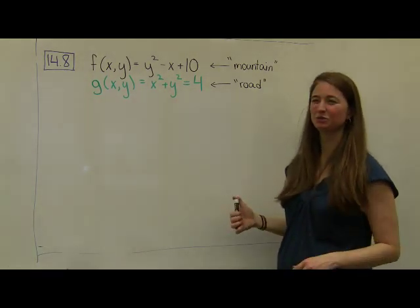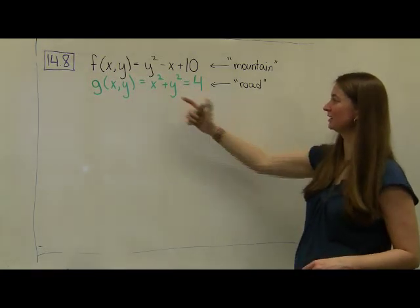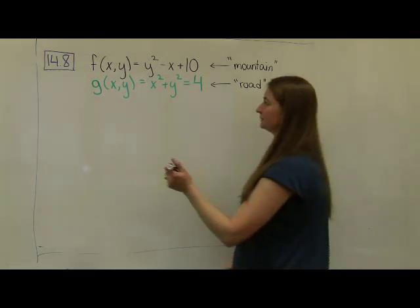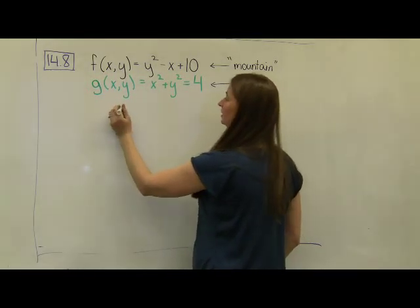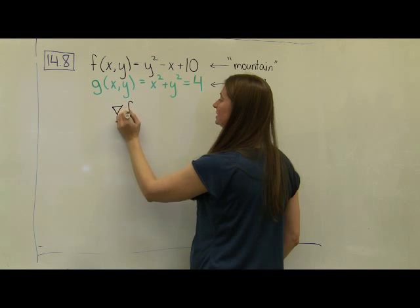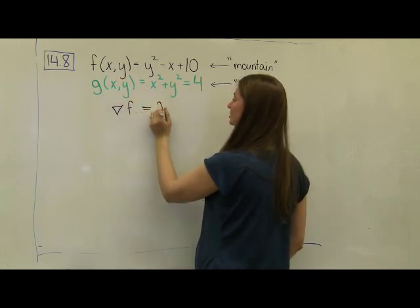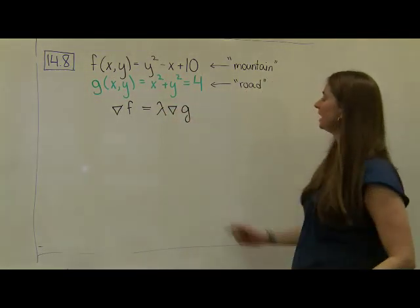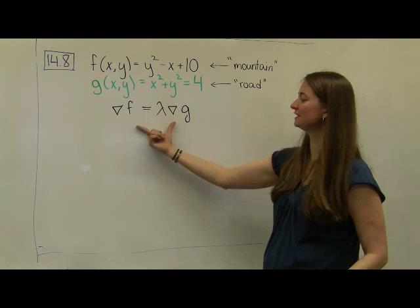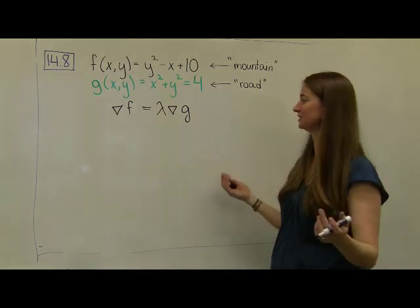Really when we work this out with algebra, it's not going to matter which one is labeled as which. But let's go ahead and use our Lagrange multiplier method. I'm going to find the gradient of my f function and set that equal to lambda times the gradient of my g function. When I set these equal to each other, I'm going to get a whole system of equations, and we're going to do a bunch of algebra and then come up with a solution.